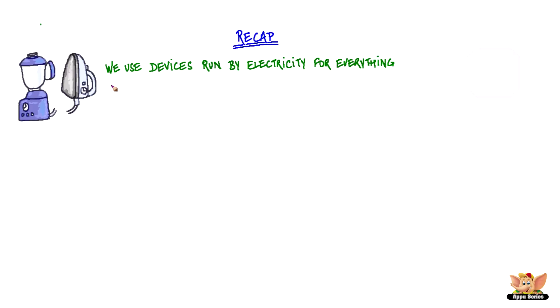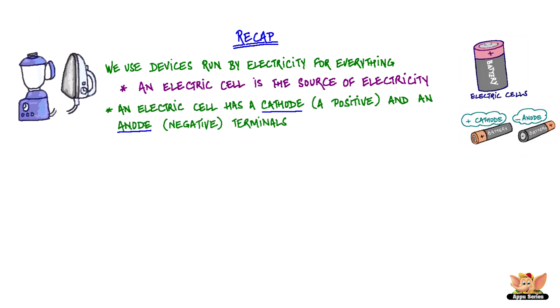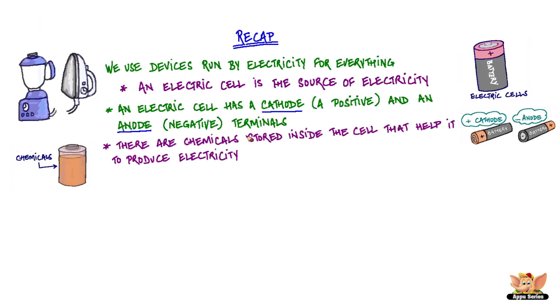Let's have a quick recap of all that we've talked about in our videos about electricity and circuits. We use devices run by electricity for everything. An electric cell is the source of electricity. An electric cell has a cathode which is a positive and an anode which is a negative terminal. There are chemicals stored inside the cell that help it to produce electricity.